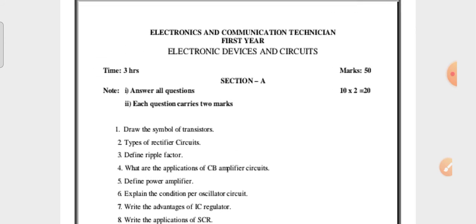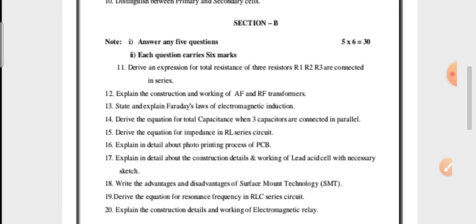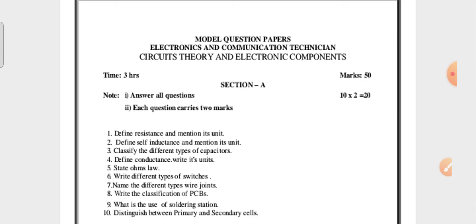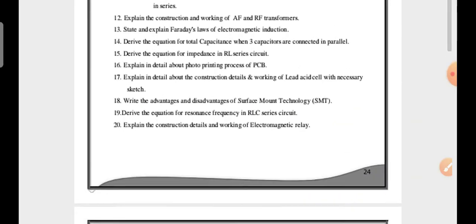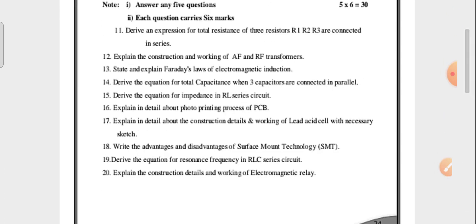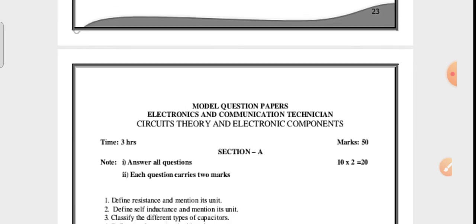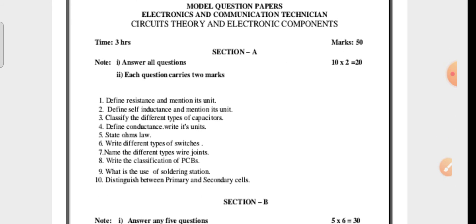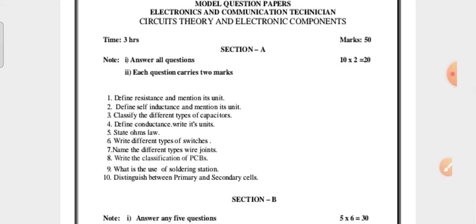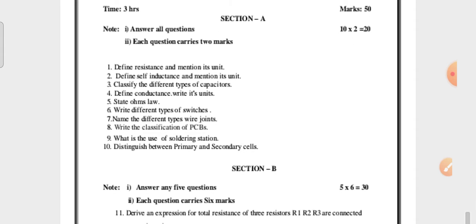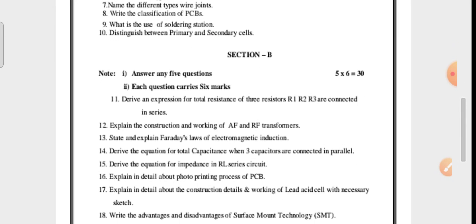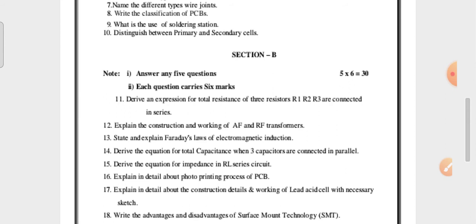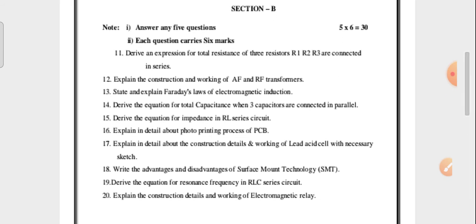Coming to the model question paper for you — this is for Electronics and Communication Technicians, Circuit Theory and Electronic Components. This is the first paper. There is Section A with two-mark questions and Section B with six-mark questions. I am showing you the model paper — go through these questions. I will also show what is deleted content, so you know what to leave and what remaining topics to read.